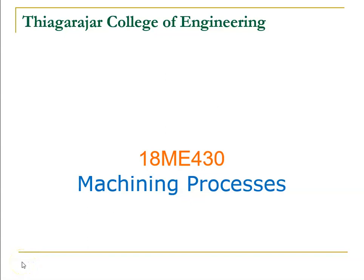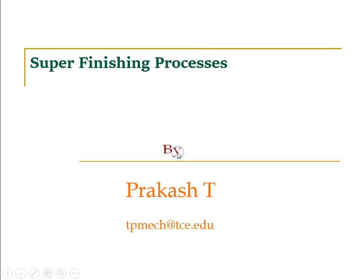Our course covers the 18-minute 430 machining process. Today we are going to see the super finishing process, which is also called a secondary process. Normally we won't perform it unless our final object needs a specified surface finish. If I want a good surface finish, I go with the secondary process; otherwise I use the traditional primary process.